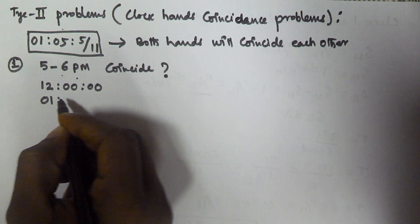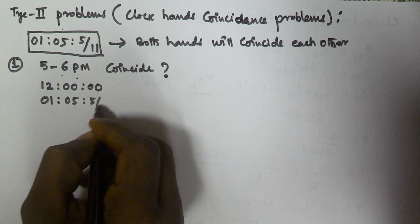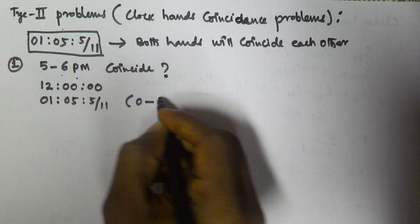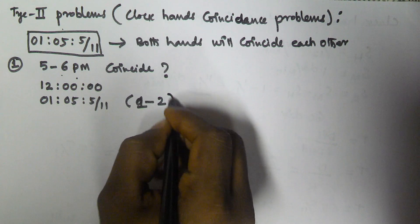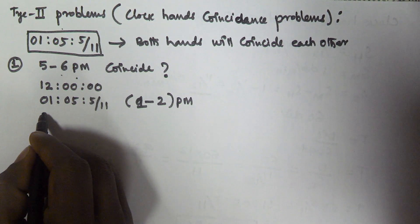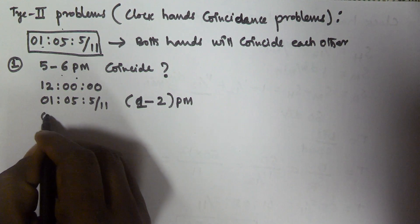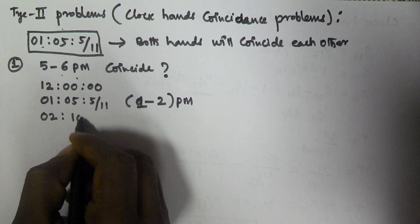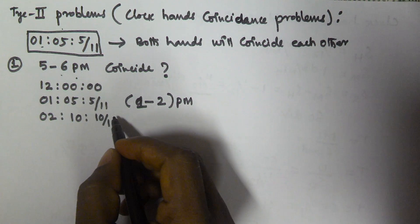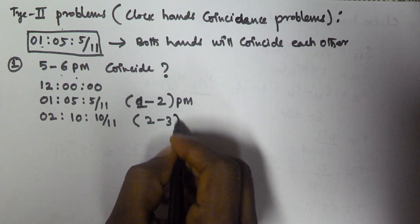The second coincidence is at 1 hour 5 minutes and 5/11 seconds, which is between 1 to 2 PM. Next we add 1 hour 5 minutes 5/11 seconds to get 2 hours 10 minutes 10/11 seconds, so the next coincidence is between 2 to 3 PM.